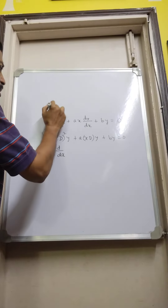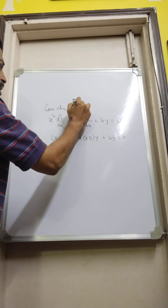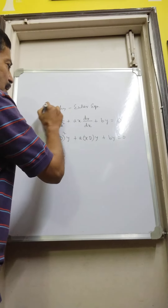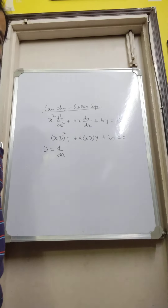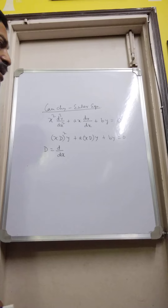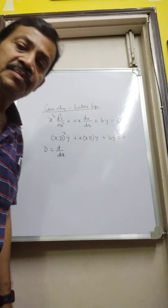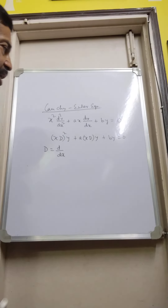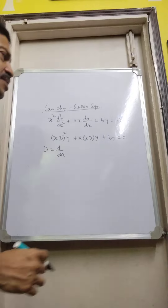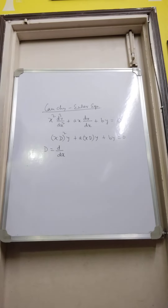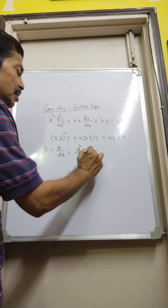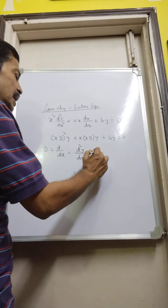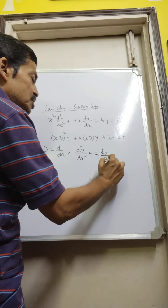This is known as the Cauchy-Euler equation, having great importance in the family of differential equations. As we all know, in linear differential equations there are some very specific forms which we can solve, and the solution of these forms helps us in many branches of physics. First of all, we should remember the general second-order linear differential equation with constant coefficient.